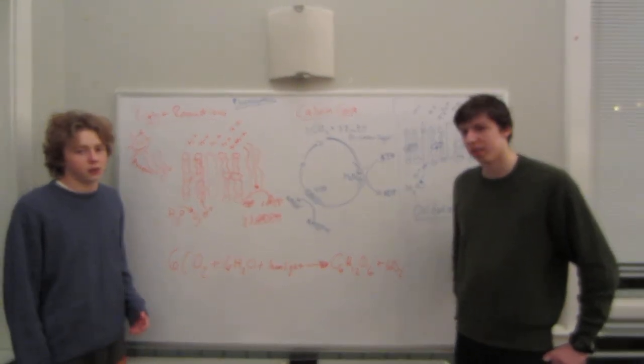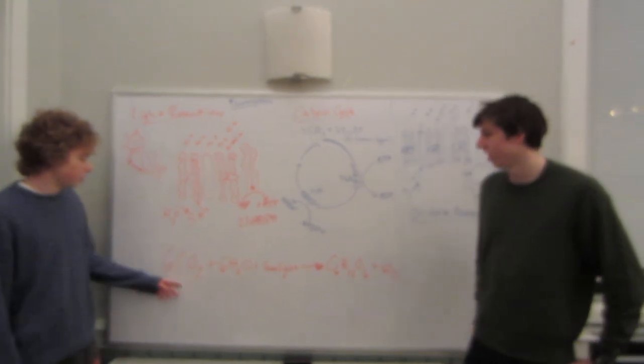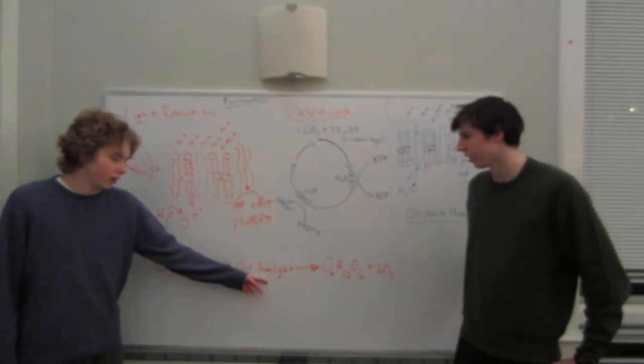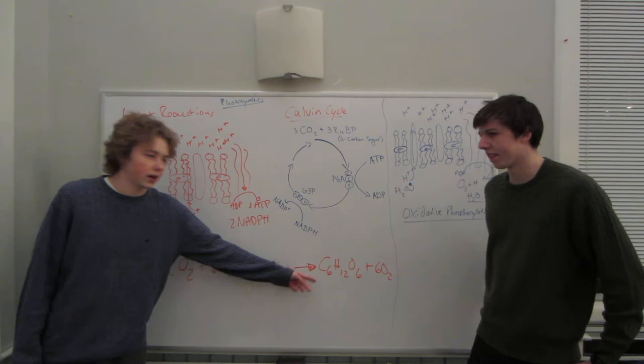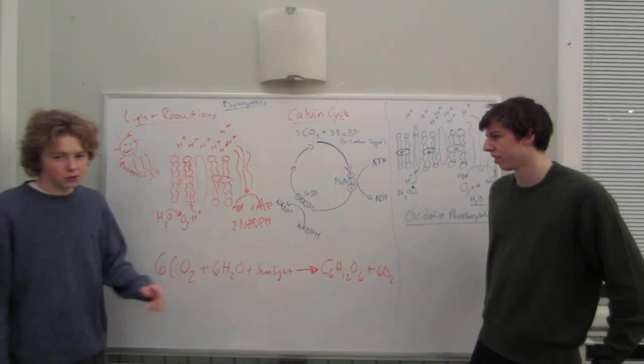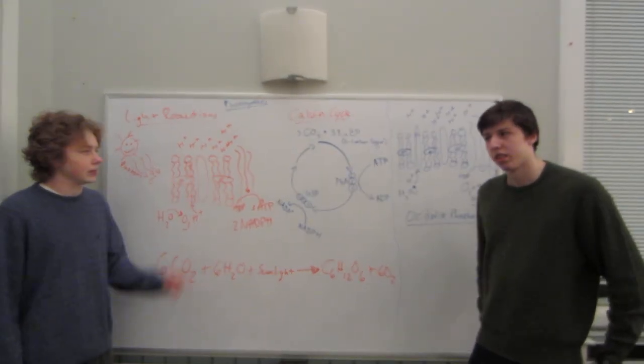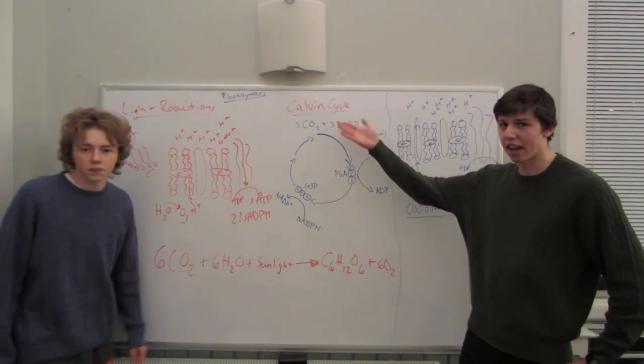Now photosynthesis is the process by which a plant takes in CO2, water, and sunlight, and produces glucose and oxygen. There are two stages to this process. The first is light reactions, and the second is the Calvin cycle.